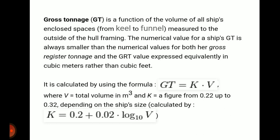Its formula is gross tonnage equals K times V, where V equals total volume in cubic meters. K is between 0.22 and 0.32, depending on the ship's size. K can be calculated by: K = 0.2 + 0.02 log(V).